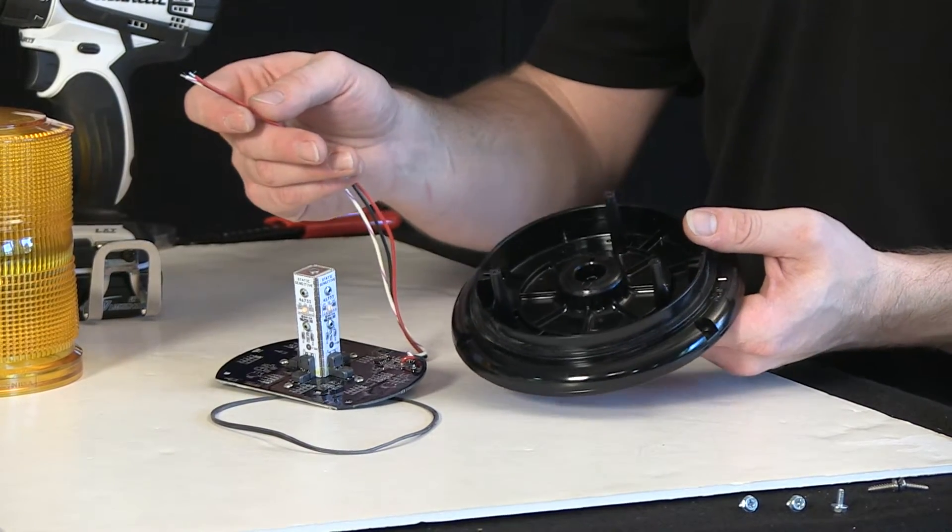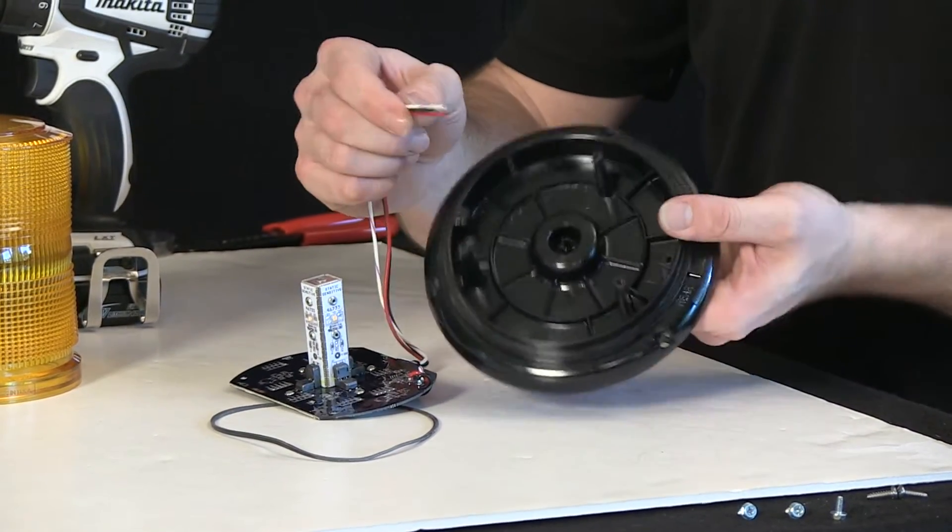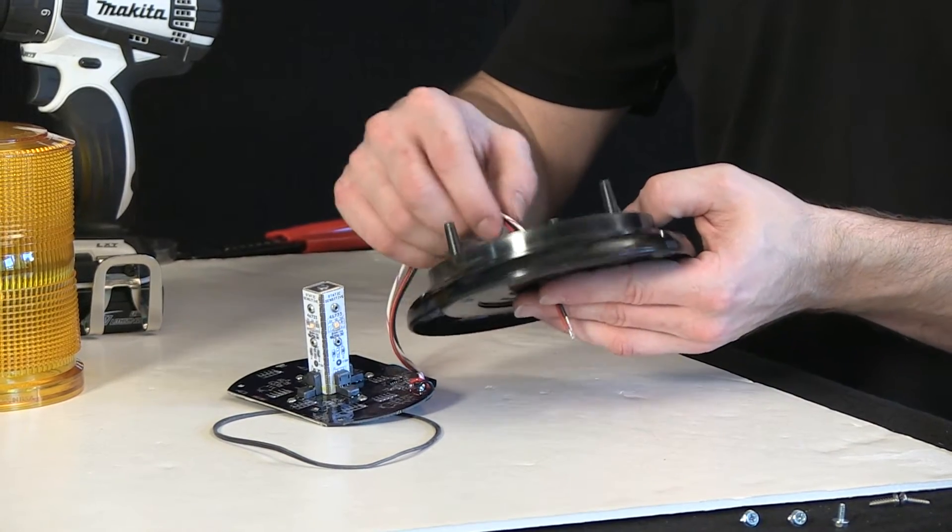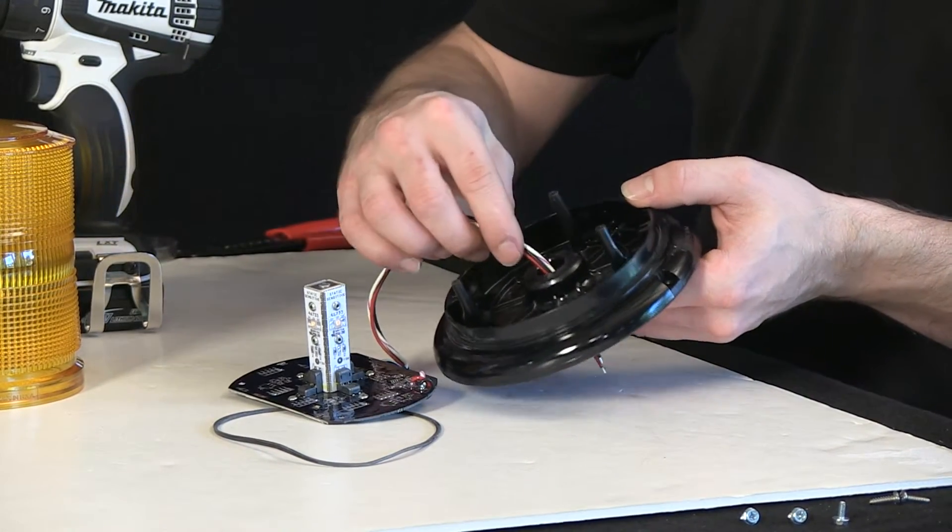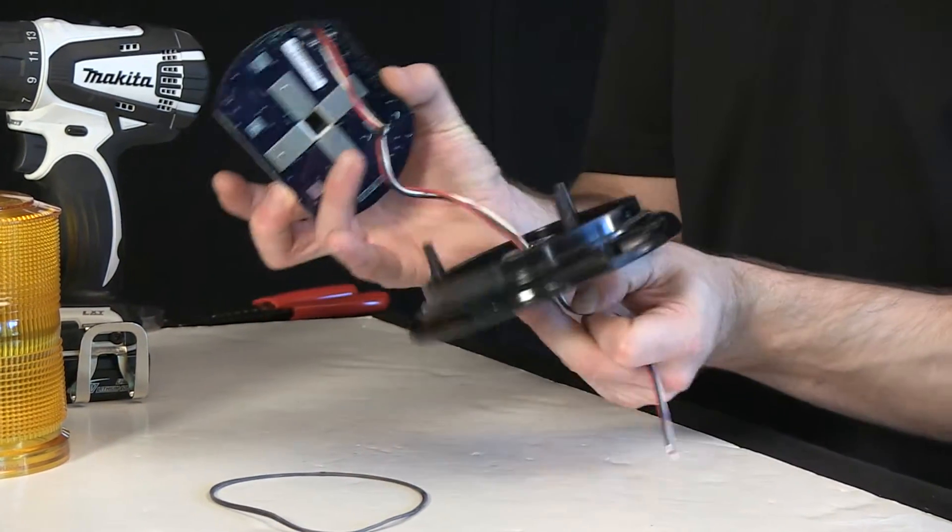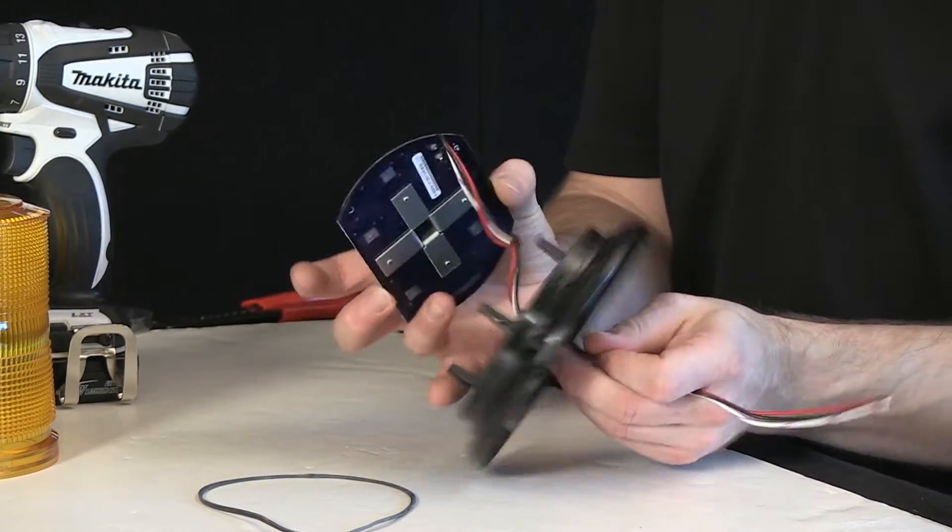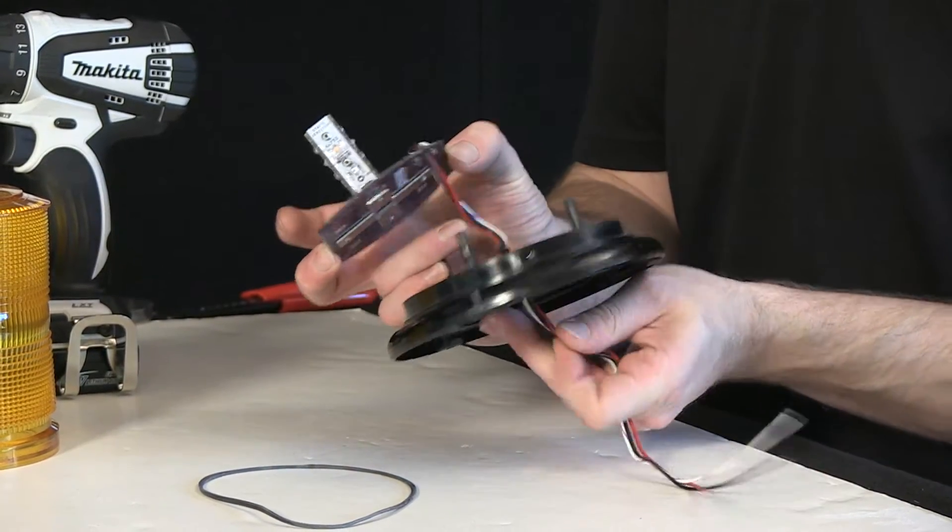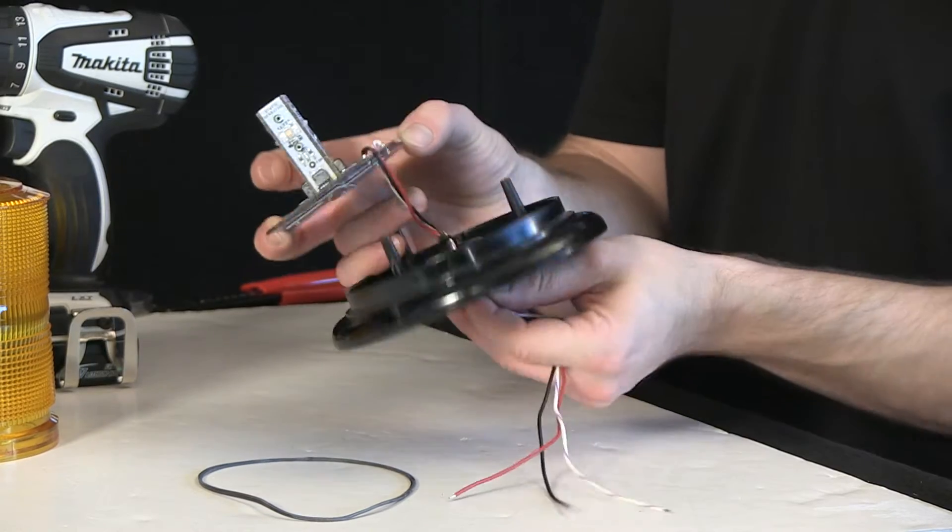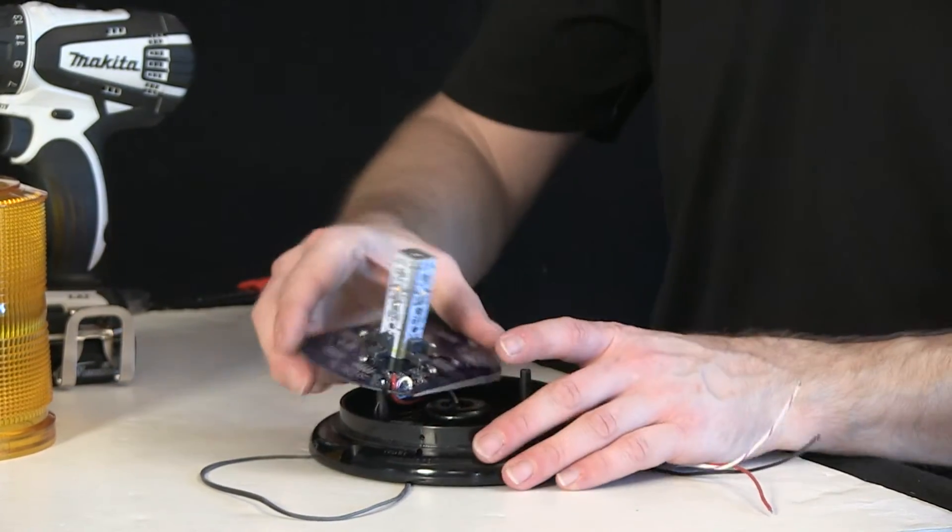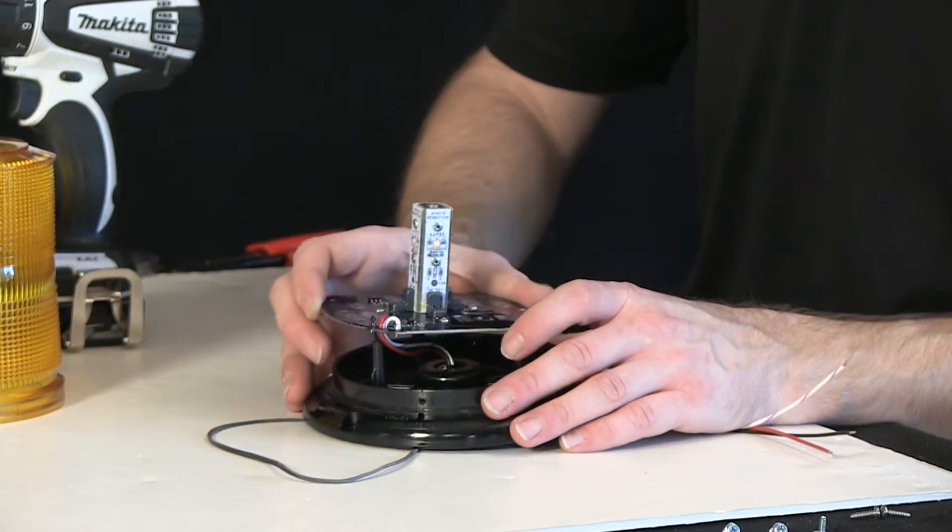So for reassembling the SNB1, you can take the wiring harness, reroute it through the center here. Since I'm not mounting it onto a pipe fixture, I'm not drilling any holes into the base. Pull that through. There we go.